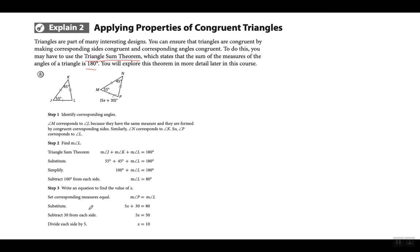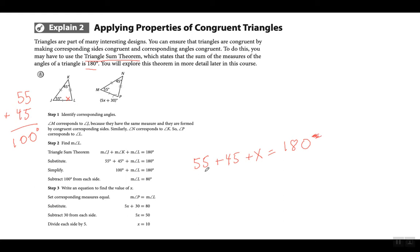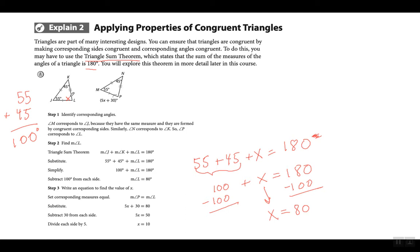Look at this triangle — we can figure it out without looking at the solution. Angle J is 55°, angle K is 45°, so what does angle L have to equal? 55 plus 45 is 100, and when you add up all three angles it has to equal 180. So 100 plus x equals 180, which means x equals 80 degrees. El ángulo que falta aquí tiene que medir 80 grados.